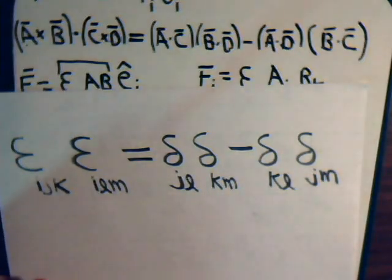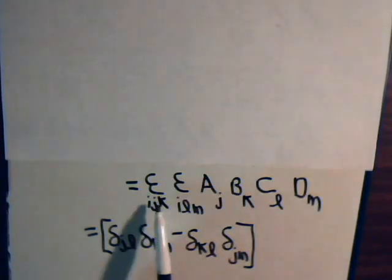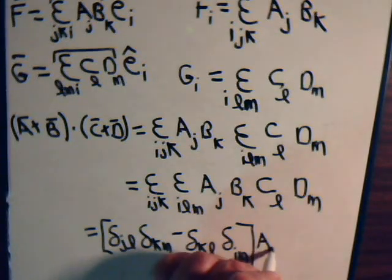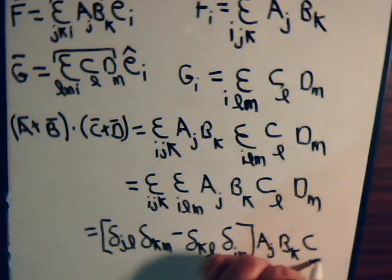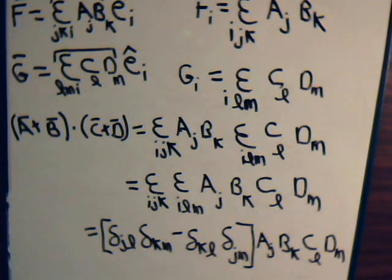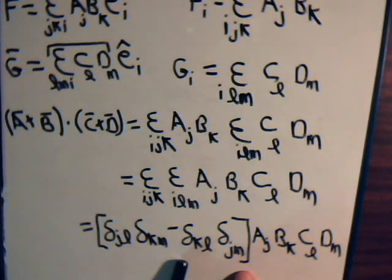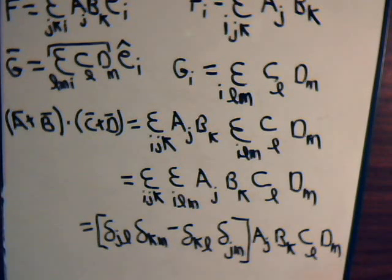So we're going to write this in place of this in our next line. So this equals Delta_JL Delta_KM minus Delta_KL Delta_JM. This is this. This is this from our identity. Then we have A_j B_k C_L D_M. So what we have is this pair of Kronecker deltas times these scalars minus this pair of Kronecker deltas operating on these scalars.